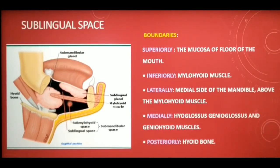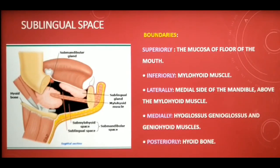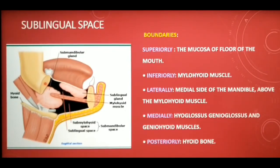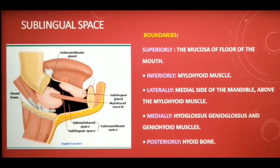The boundaries of the sublingual space are: superiorly the mucosa of the floor of the mouth; inferiorly the mylohyoid muscle; laterally the medial side of the mandible above the mylohyoid muscle; medially the tongue muscles — hyoglossus, genioglossus, and geniohyoid muscles; and posteriorly the hyoid bone.